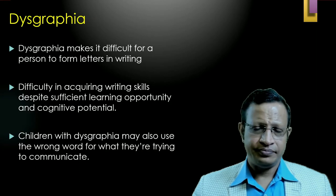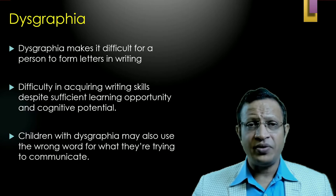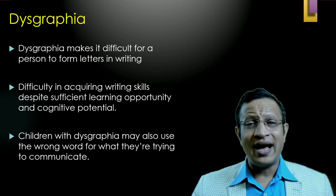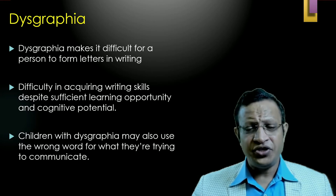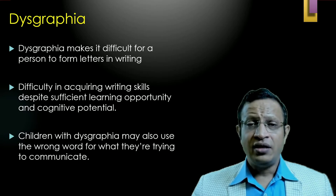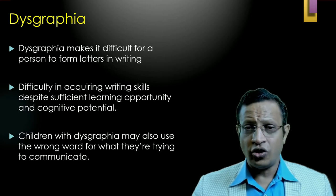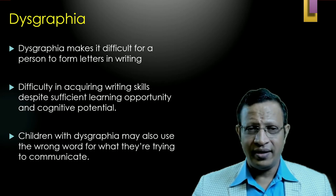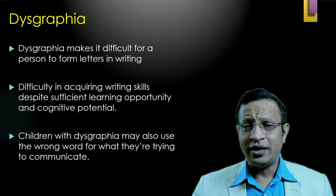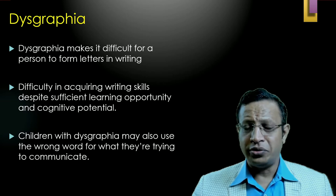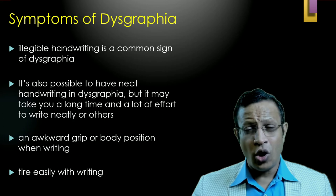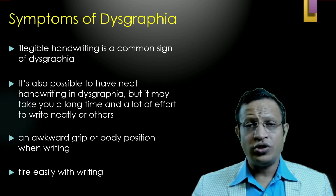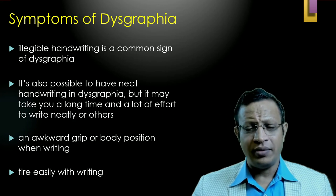Dysgraphia makes it difficult for a person to form letters in writing, and there is difficulty in acquiring writing skills despite sufficient learning opportunity and cognitive potential. That means the child may be bright — above average or average — but there is a problem in writing. Children with dysgraphia may also use the wrong word for what they are trying to communicate. Illegible handwriting is the commonest sign of dysgraphia. It is also possible to have neat handwriting in dysgraphia, but it may take a long time and a lot of effort compared to others.